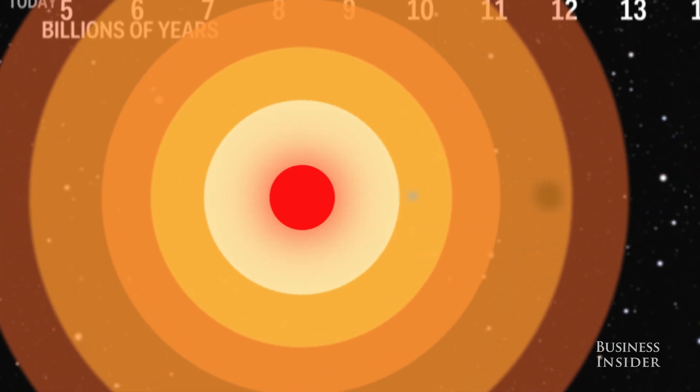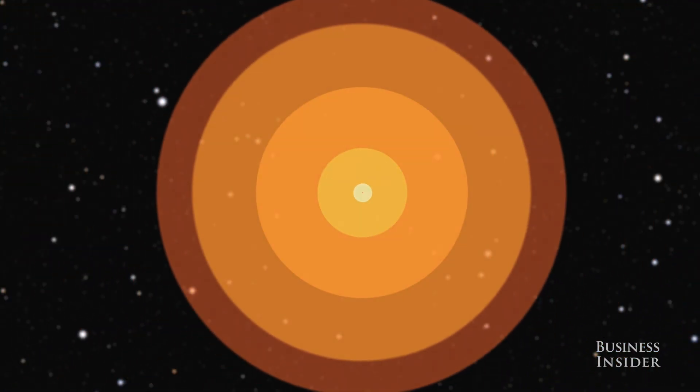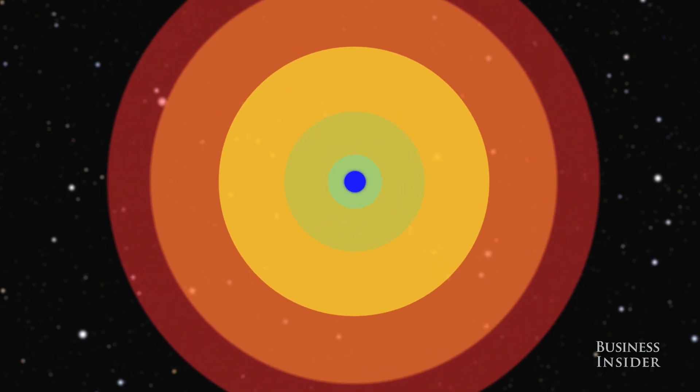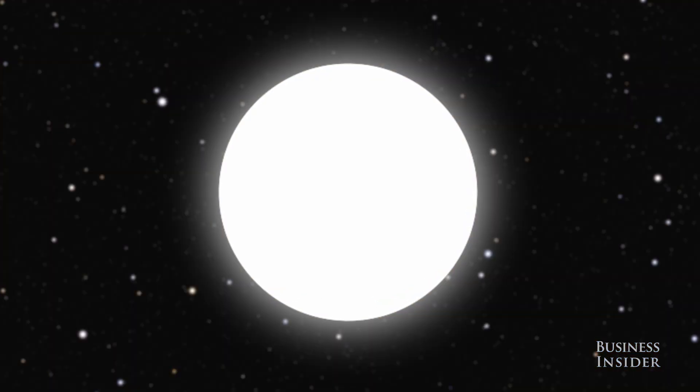Once the Sun has emptied its fuel reserves, it will become unstable. As a result, it will begin to pulse. Each pulse will remove more of the Sun's mass until all that's left is a cool, dense core. This core is called a white dwarf.